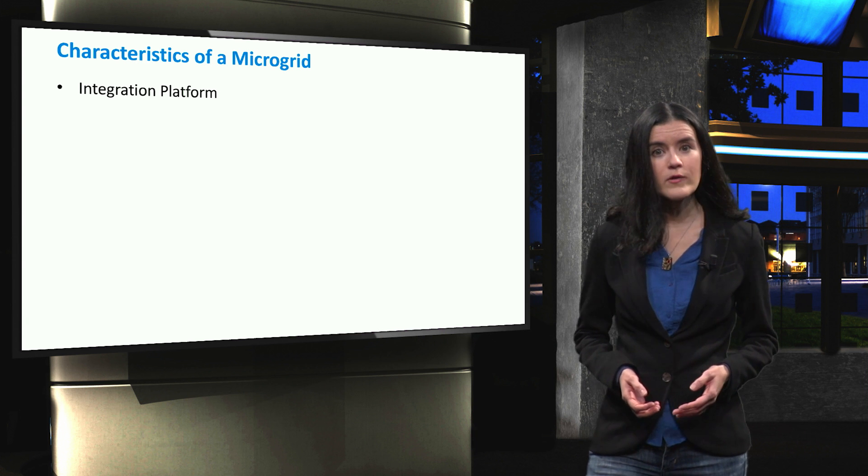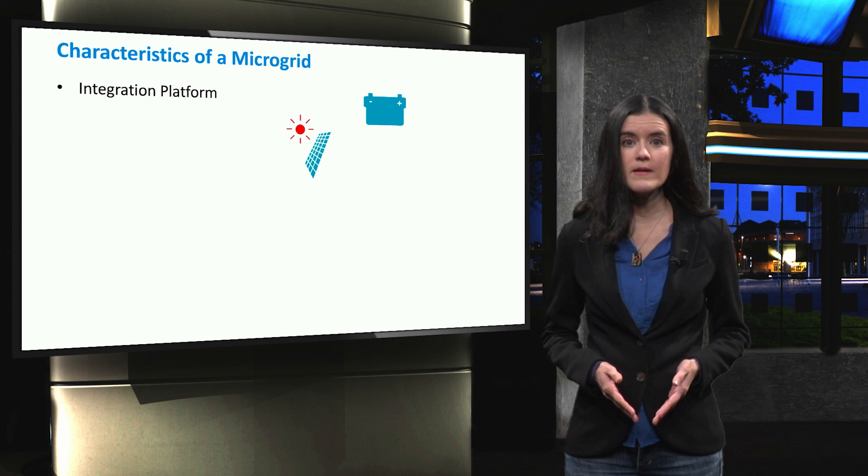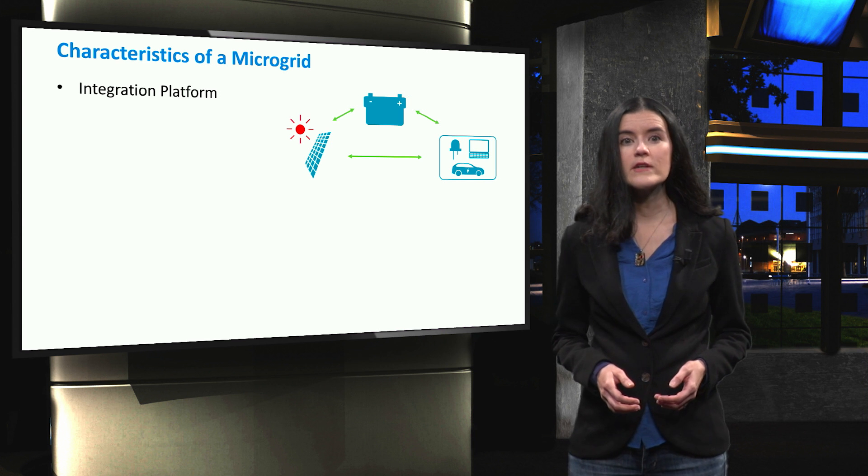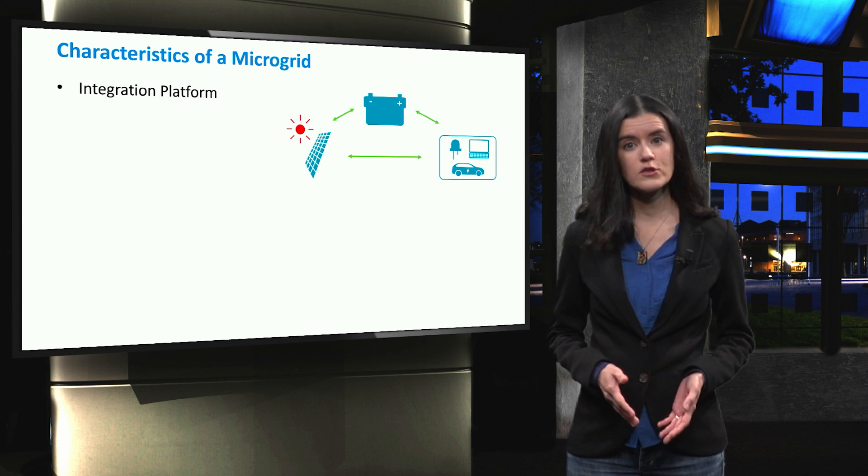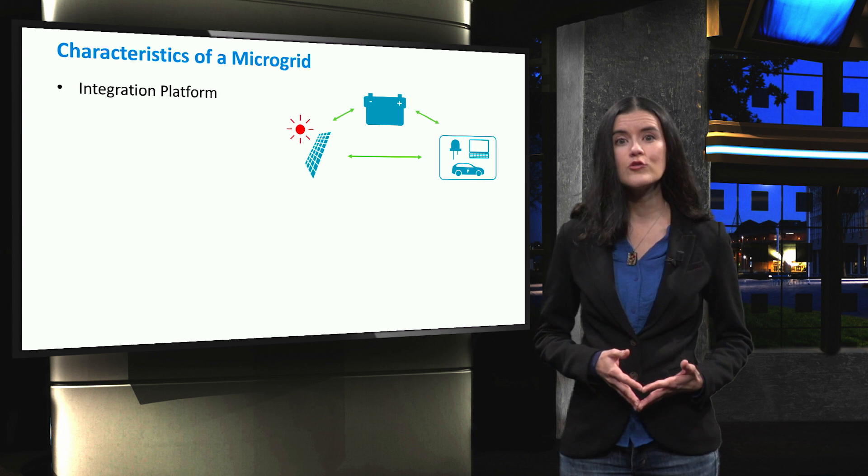First, a microgrid is an integration platform for local generation, storage and demand, all placed within a local distribution grid. Local generation is typically found at low voltage levels and it is generally known as micro generation due to its low scale.